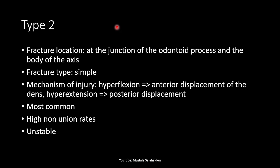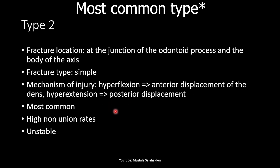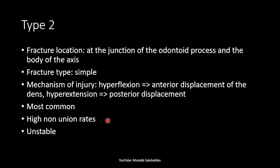Type 2 fracture is at the junction of the odontoid process and the body of the axis vertebrae — at the base. It is a simple fracture. The mechanism of injury is either hyperflexion or hyperextension. With hyperflexion we get anterior displacement of the odontoid process, and with hyperextension we get posterior displacement. This is the most common type and it has the highest non-union rates. It is an unstable fracture.